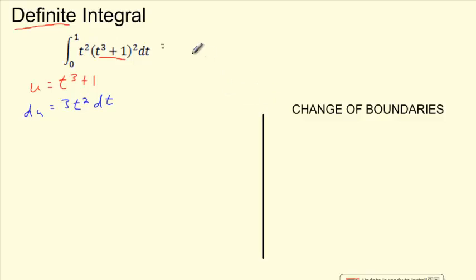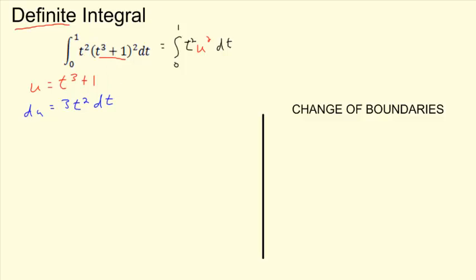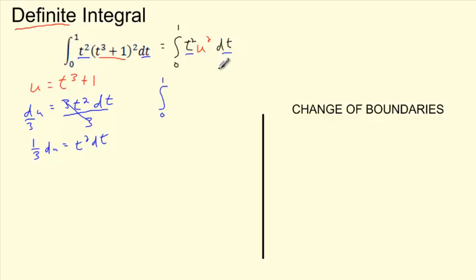I'm going to show you two ways: one, we're going to do normal u-substitution, and another one with the change of boundaries as the shortcut. Just to show that it works — that's going to be my u, and it's squared, but I've got t squared and dt left over. That 3 is a little bonus, so we're going to divide both sides by 3. Divide by 3, so we really get 1/3 du. Those cancel, giving me t squared dt. So I can rewrite this as the integral from 0 to 1 — the t squared dt is gone — turning into u squared du, with 1/3 out front. Now I've done the u-substitution.